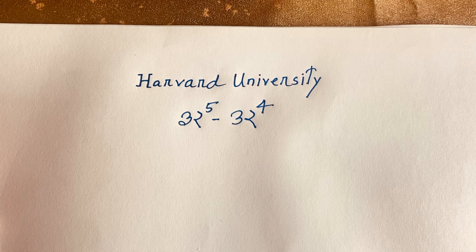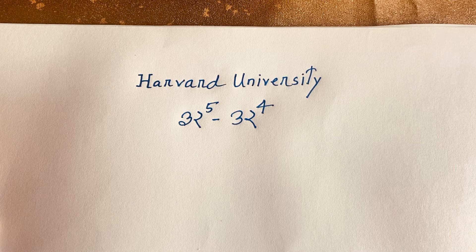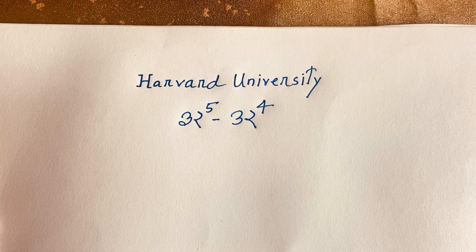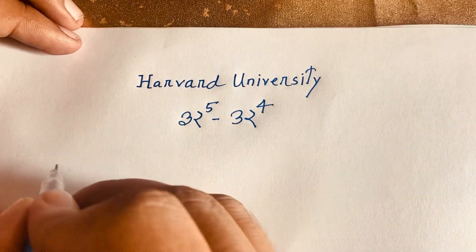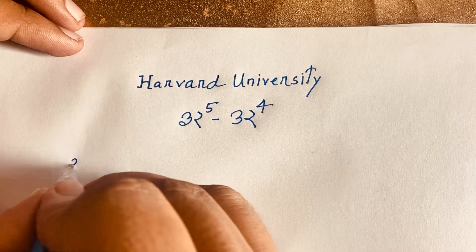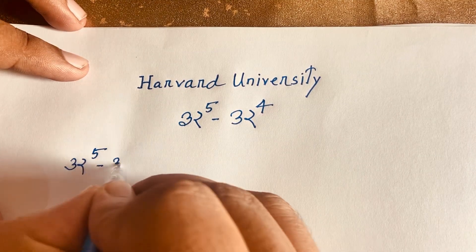Hello everyone. How to solve this interesting math question: 32 to the power 5 minus 32 to the power 4 — how to simplify this math question without a calculator? It is an interesting math problem, so let's start.